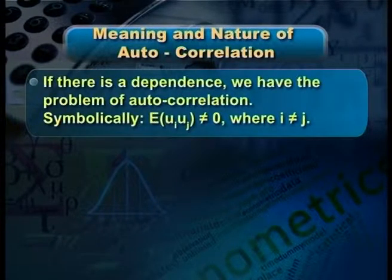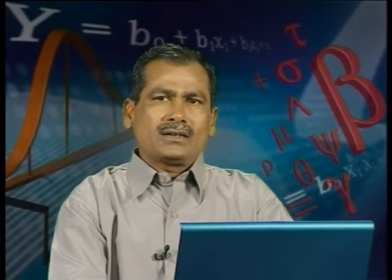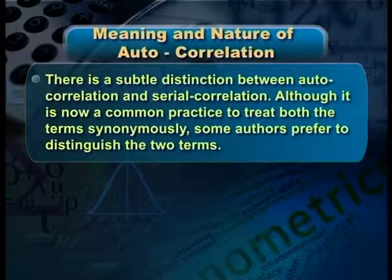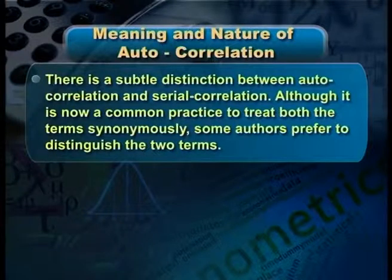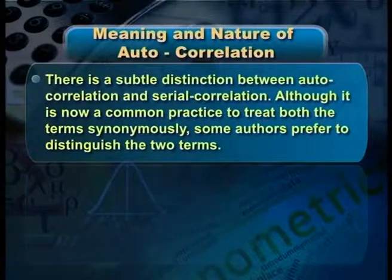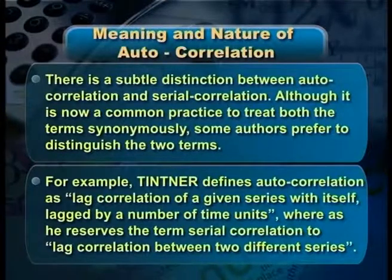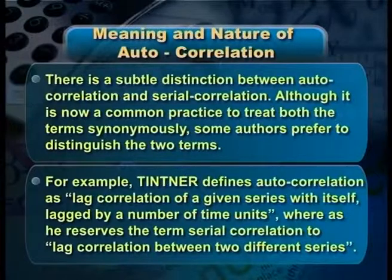Symbolically, we can say that E(ui, uj) ≠ 0. The term autocorrelation can also be called serial correlation. Nowadays these two terms are used as synonyms, but some writers made an attempt to draw a subtle distinction between autocorrelation and serial correlation. In this regard I would like to quote Tietner. To Tietner, autocorrelation has lag correlation of a given series with itself lagged by a number of time units, whereas he reserves the term serial correlation to lag correlation between two different series.